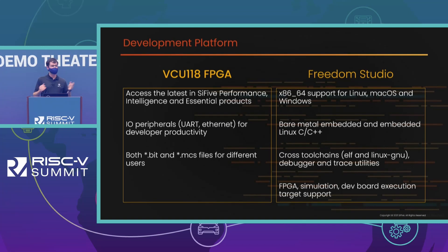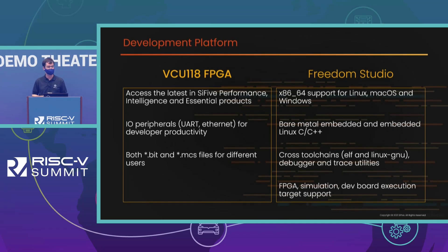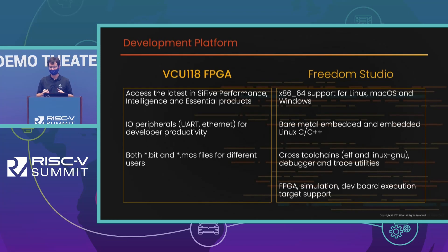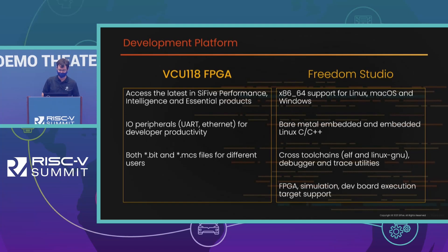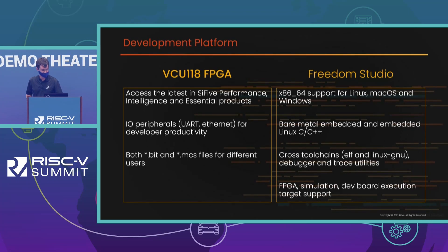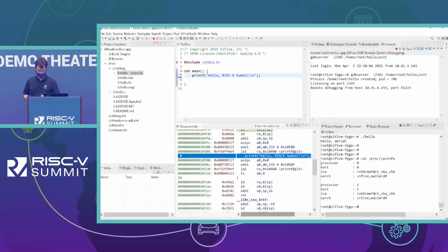The demo we have here today is P550 available at our booth on a DCU-118 FPGA. You can play around with it — all the peripherals put together into a complete package with the FreedomU SDK. It's cool every time I look at it to see debugging that core and seeing it work. Come see the highest-performing RISC-V processor IP that we have today.